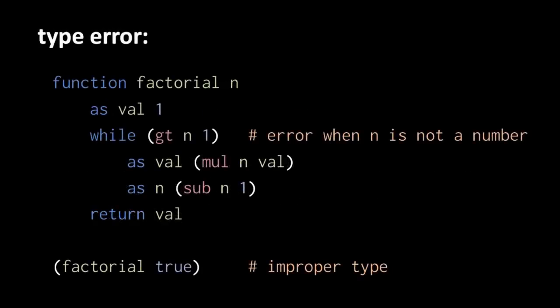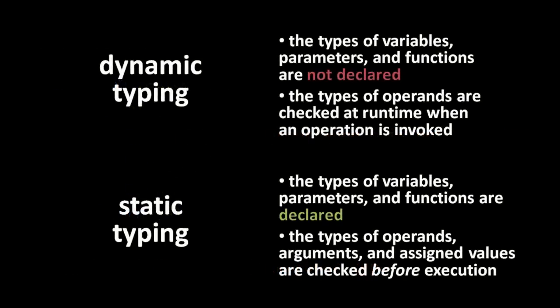It's a fact of life that programmers are going to make mistakes. One common kind of mistake we call a type error, which occurs when we perform an operation upon the wrong kind of data. For example, in this pigeon code, we define a function which computes a factorial. If we improperly invoke the factorial function with a boolean argument instead of a number, a type error is triggered because the greater than operation only works with number operands, not booleans. This is the behavior of a dynamic typing system, such as in Pigeon, JavaScript, and Python. In such languages, when a built-in operator receives the wrong kind of argument, an error occurs — in most dynamic languages, an exception is thrown.